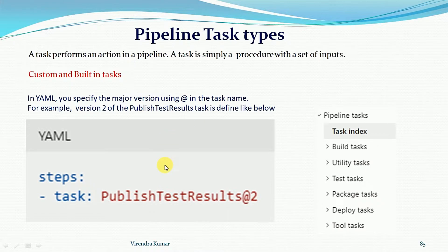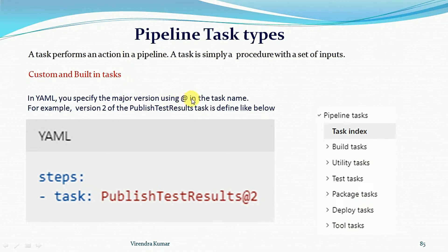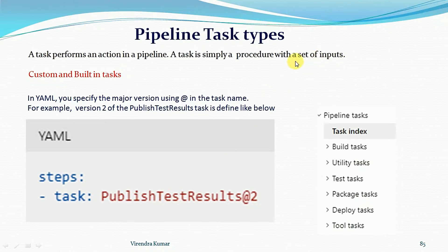Now the question is how to define a task in a YAML pipeline versus a classic view editor pipeline. In YAML pipelines, we specify the major version using the at-sign after the task name. So you define the task name, then provide the at-sign followed by the version number — for example, version two. In custom type tasks, we define the version number through the inputs section and provide custom inputs for the particular task.